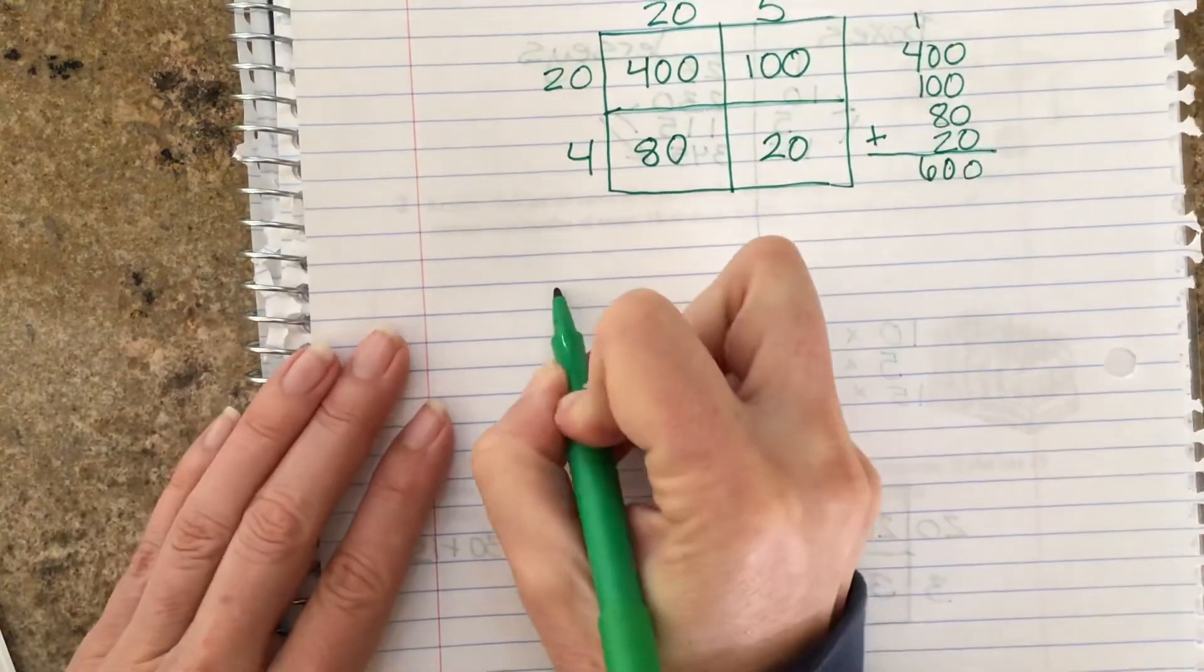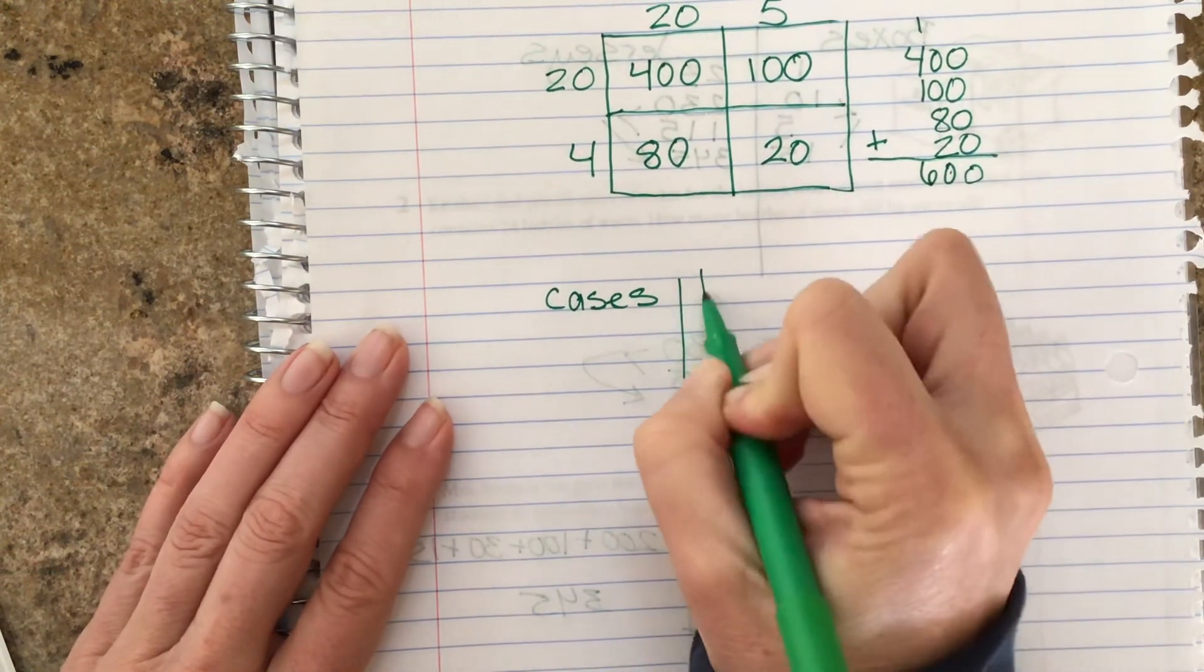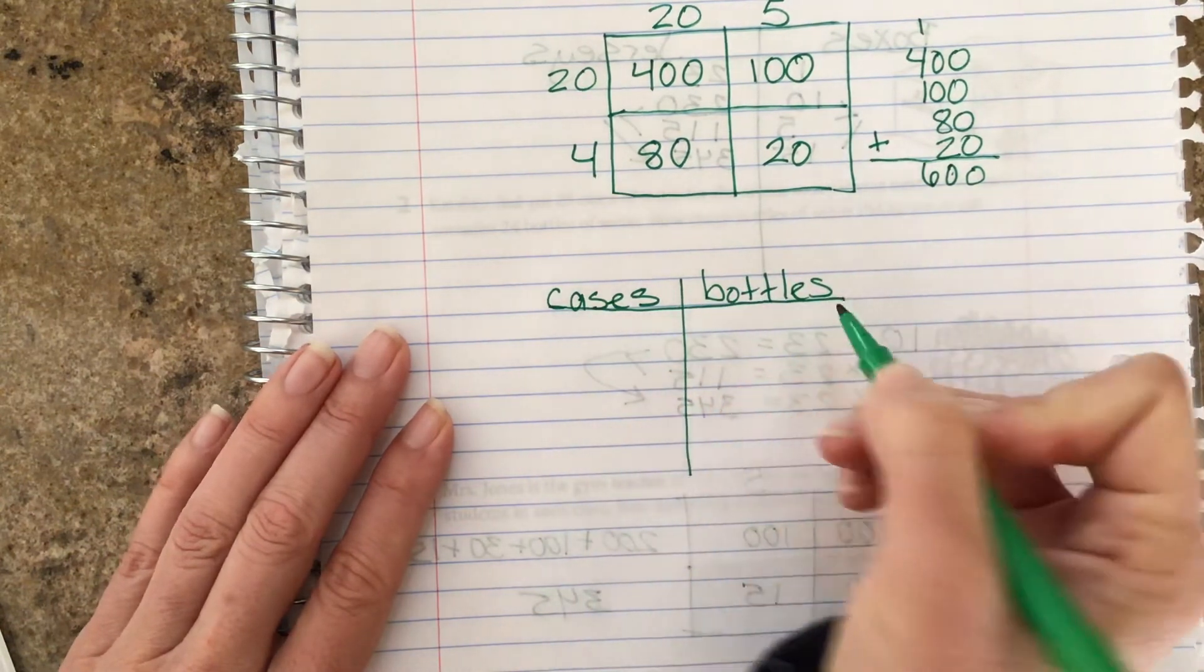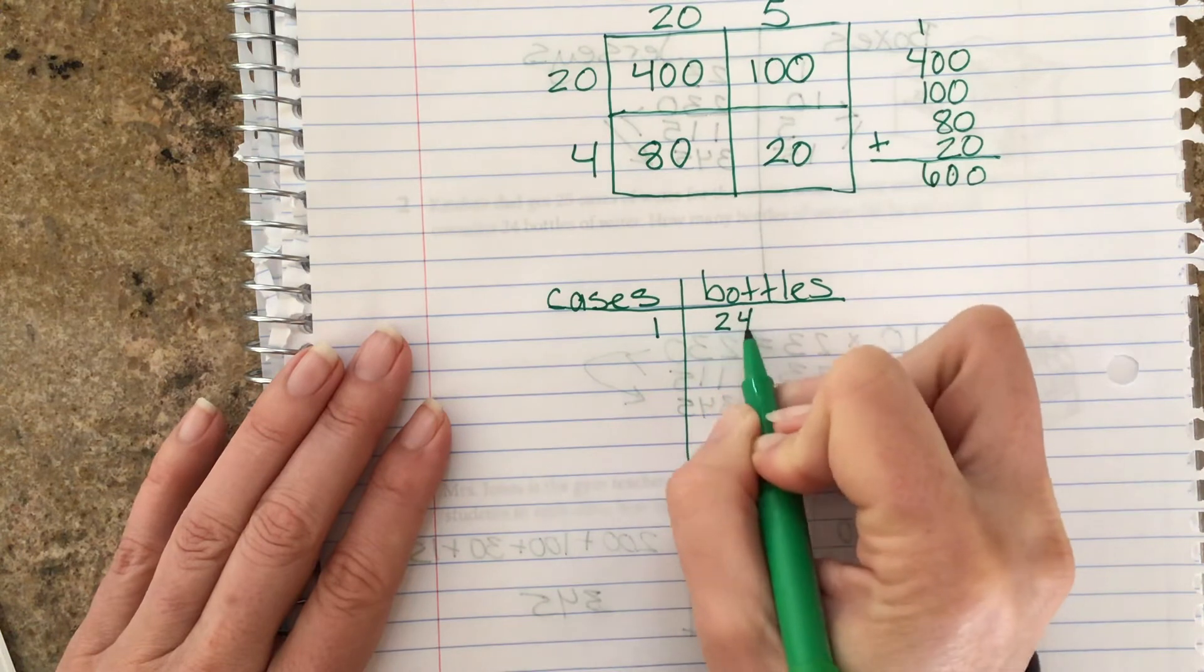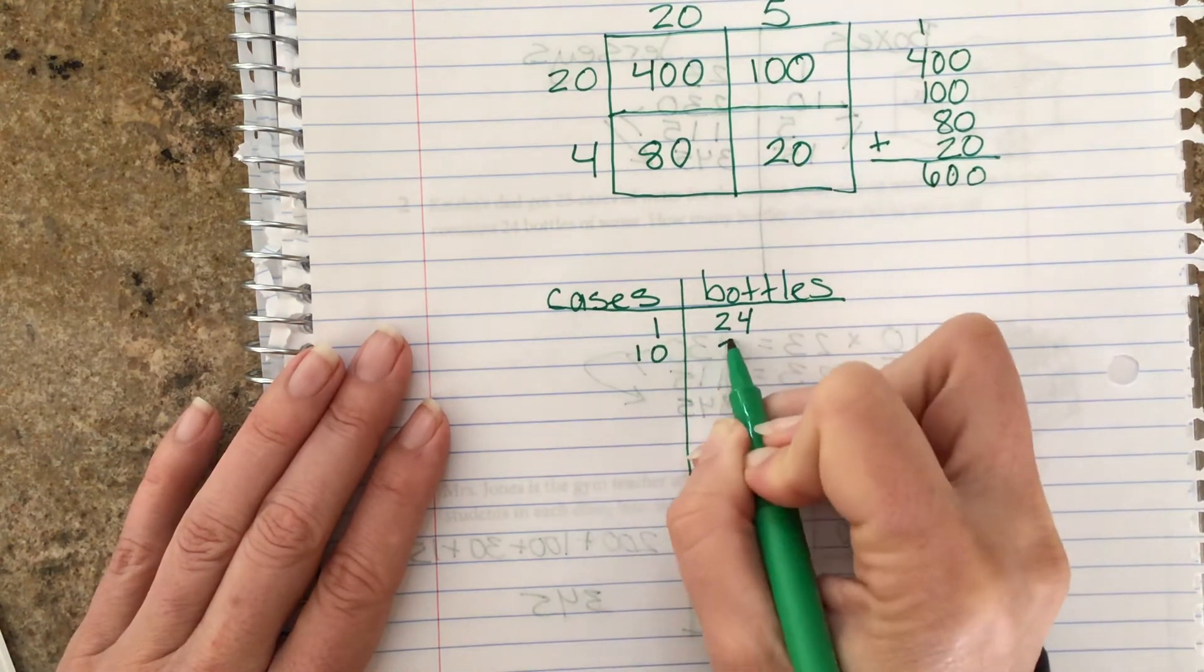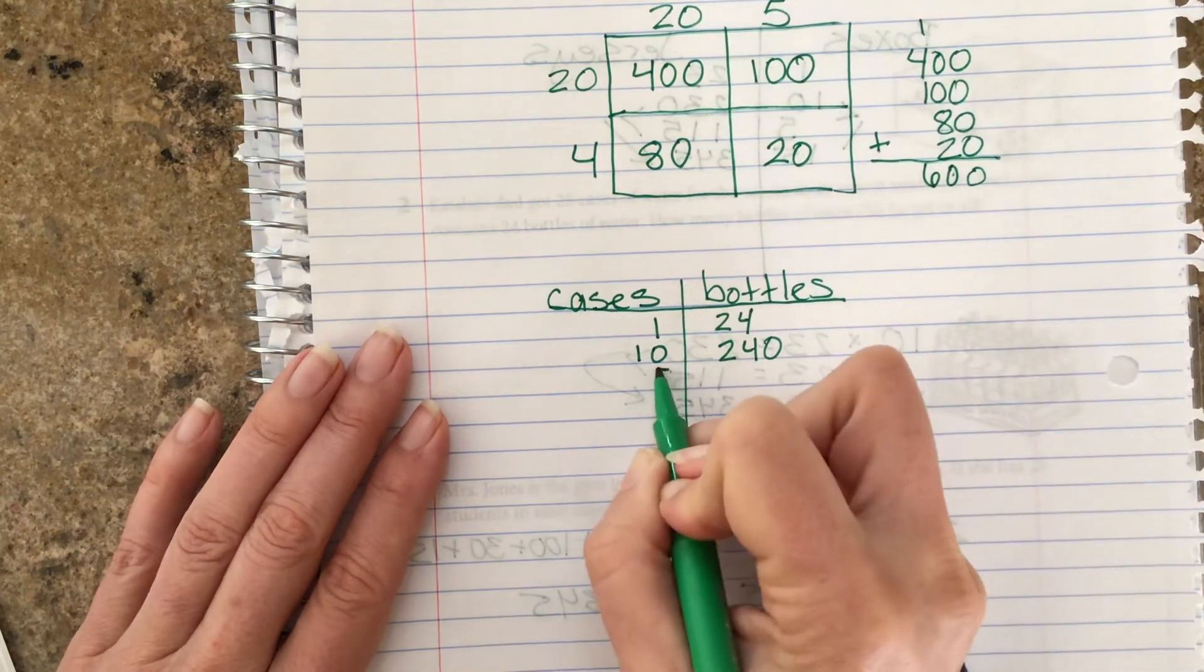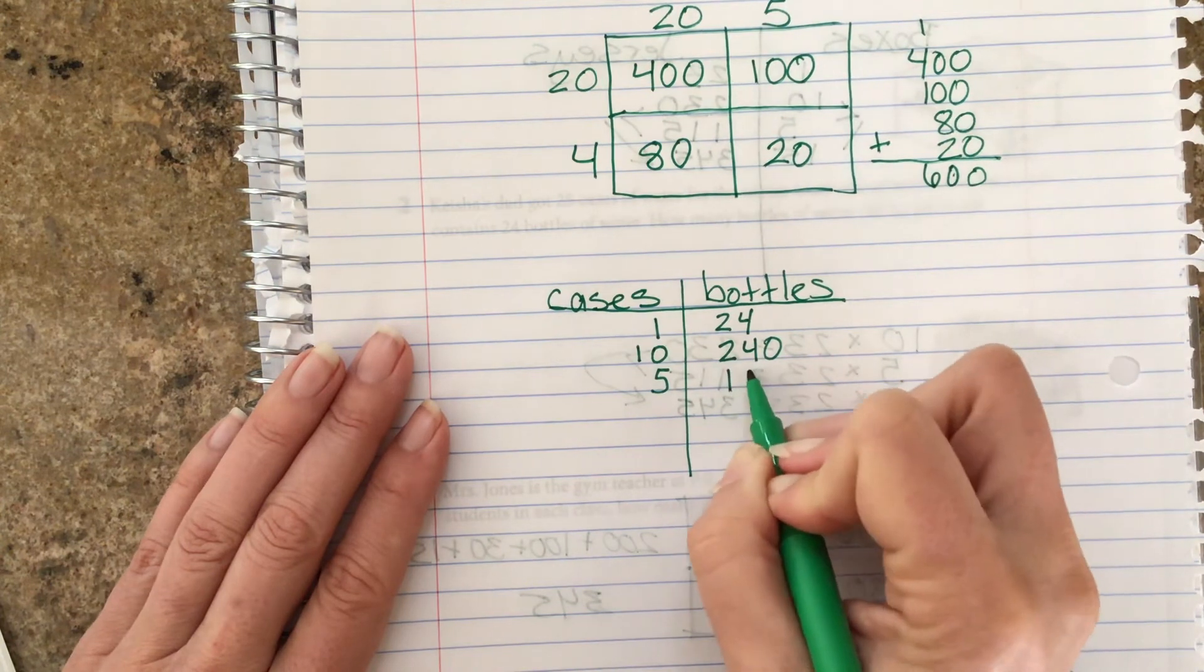Did you do something else? Did you do a ratio table maybe where you said cases and bottles? So we remember one case had 24, so you could do 10 would be 240. 5 is half of 10, half of 240 is 120.